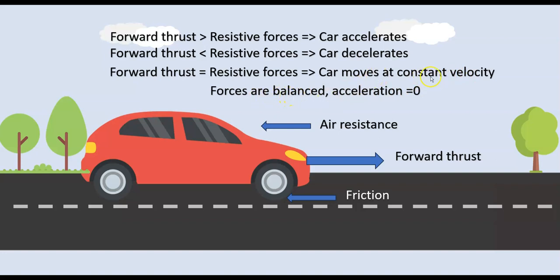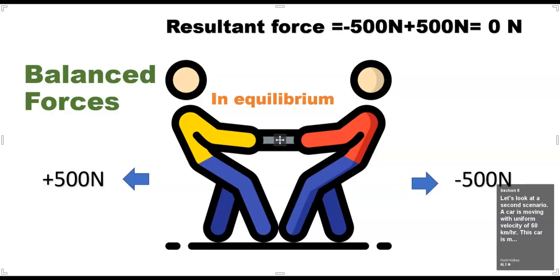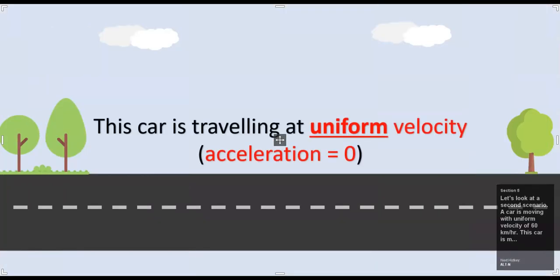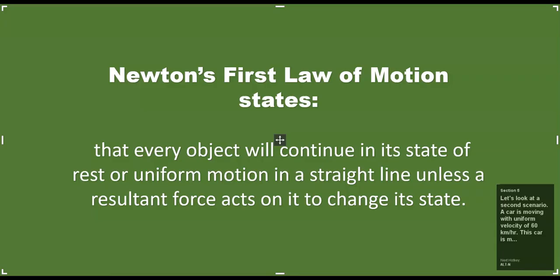In other words, when these forces are balanced, the car continues to move with constant velocity. Hence, when forces are balanced, there is zero resultant force. The object can either be at rest or have a constant velocity. So this is why Newton's first law of motion states that when an object is at rest or in uniform motion, it will continue in its state of rest or uniform motion respectively, unless a resultant force acts on it. So can you see that Newton's first law is all about balanced forces?